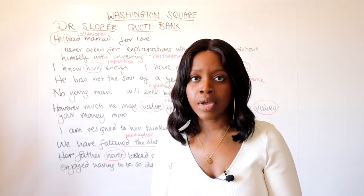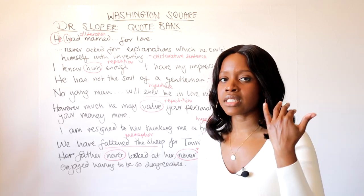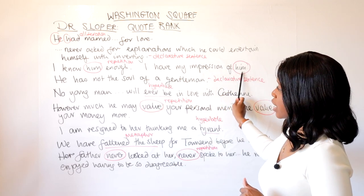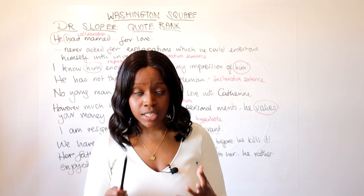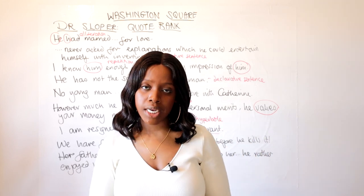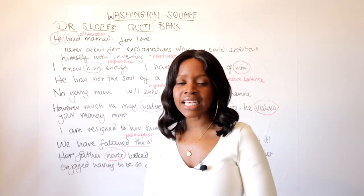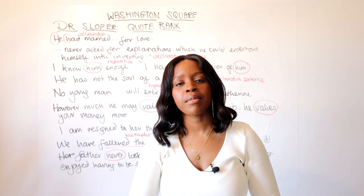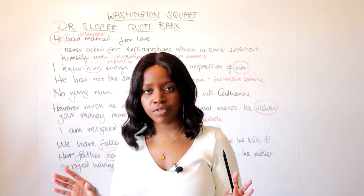The third quotation: Dr. Sloper states, 'I know him enough; I have my impression of him.' The repetition of the pronoun 'him' shows that Dr. Sloper is the gatekeeper of upper class society — he has judged Maurice as not part of that crop of upper class men and has decided to stonewall him, refusing him access into the Sloper household and totally disapproving of the engagement.